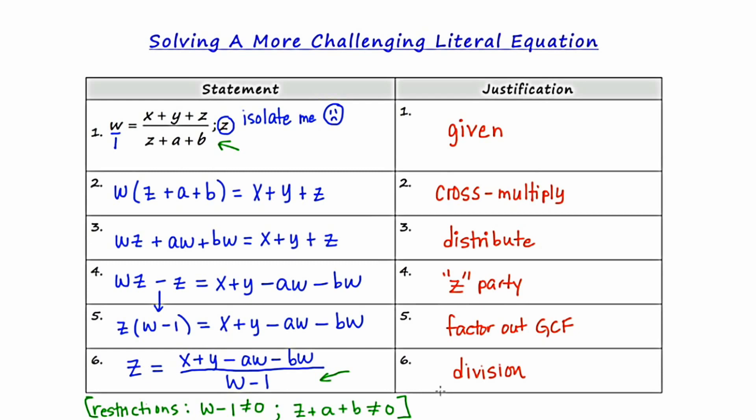So here's an example of a more challenging literal equation problem, and I've also included at the end the restrictions. And I've justified each of the steps that allowed me to get to the answer in this two-column proof format.